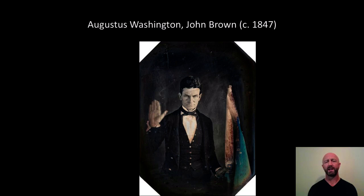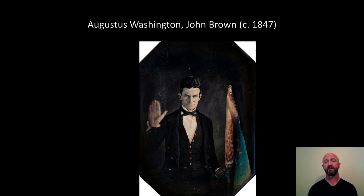On the other side of things, I should note that there were many photographers who were people of color, including Augustus Washington, who had his own studio and focused on their own heroes. This is John Brown, who led the revolt at Harper's Ferry. These early abolitionists would in some ways lead to the Civil War and the emancipation of slaves. The subjects they chose — their stars, heroes, or celebrities — were a little different from the celebrities in the world of everyday white people.